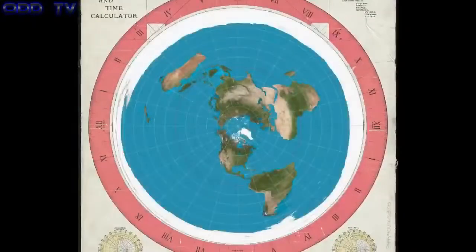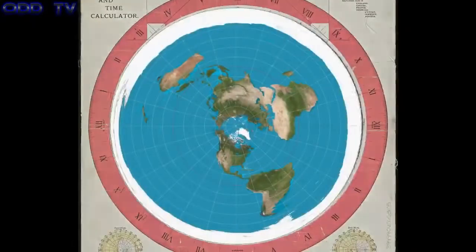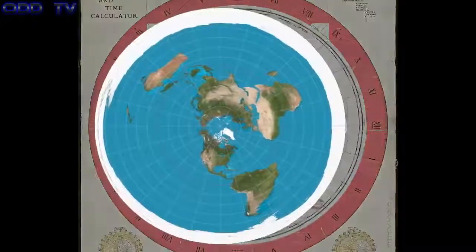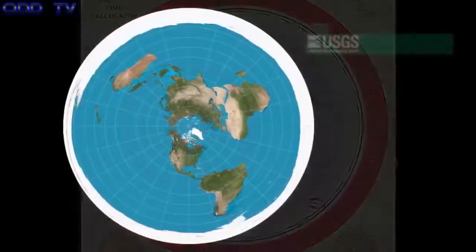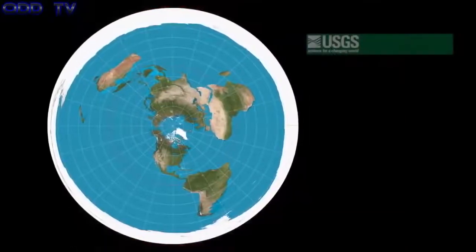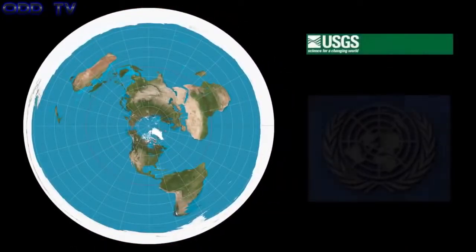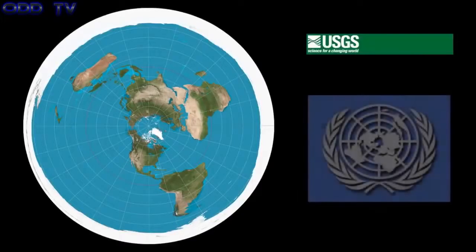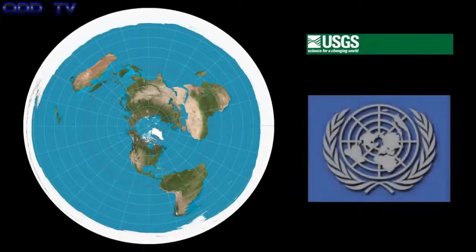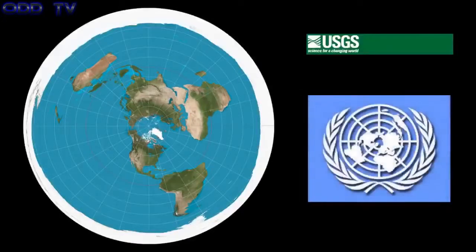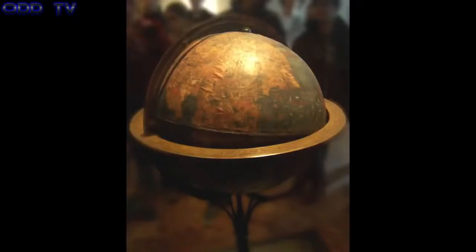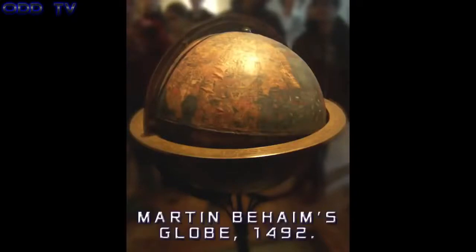The Gleason's map is basically an azimuthal equidistant projection, which can be traced back to the year 1000. The AE map is also an official map of the United States Geological Survey, the USGS, and the official logo for the United Nations. The oldest known globe in the world is from 1492.